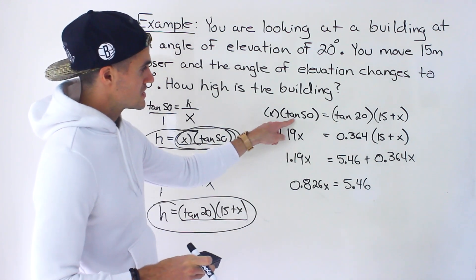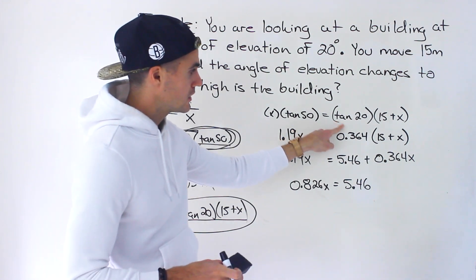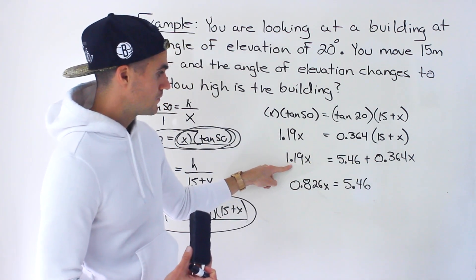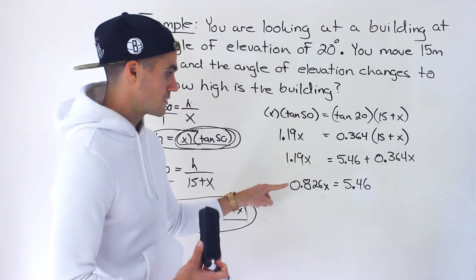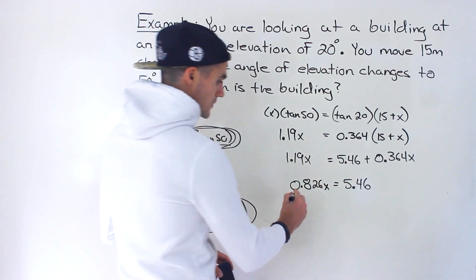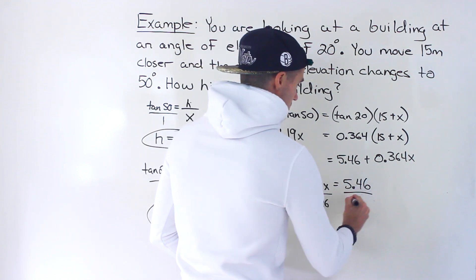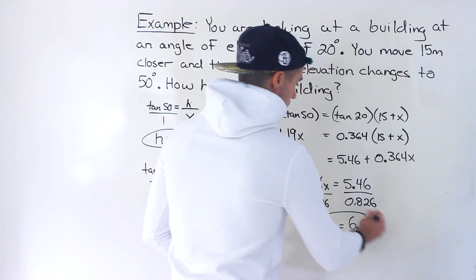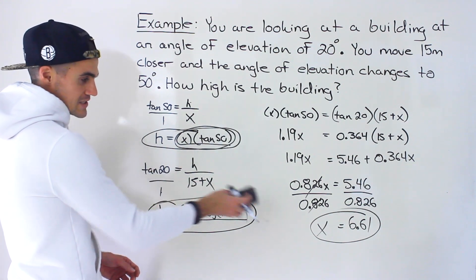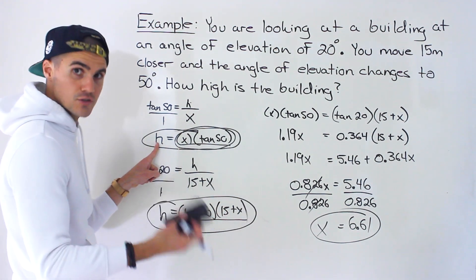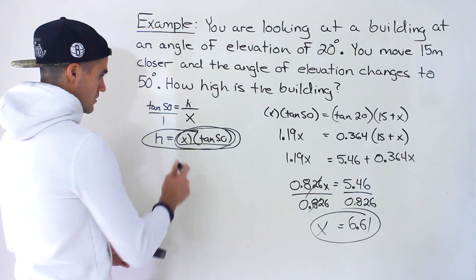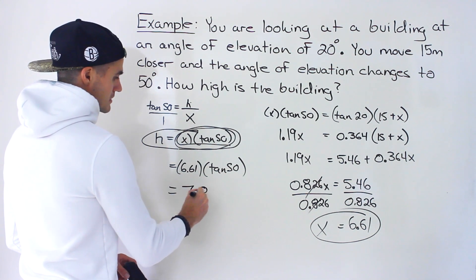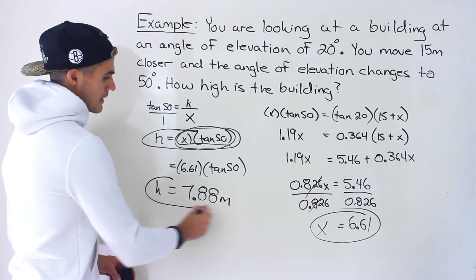Converting to decimals: tan 50 ≈ 1.19 and tan 20 ≈ 0.364. So we get 1.19X = 0.364(15 + X). Distributing: 1.19X = 5.46 + 0.364X. Bringing the 0.364X over: 0.826X = 5.46. Dividing both sides by 0.826 gives X ≈ 6.61. Then plugging X back into H = X · tan 50 gives H = 6.61 × tan 50 ≈ 7.88 meters. That is the height of the building.